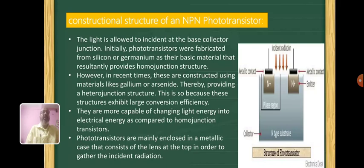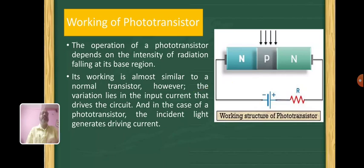They are more capable of changing light energy into electrical energy as compared to homojunction transistors. Phototransistors are mainly enclosed in a metallic case that consists of lenses at the top in order to gather the incident radiation on it.